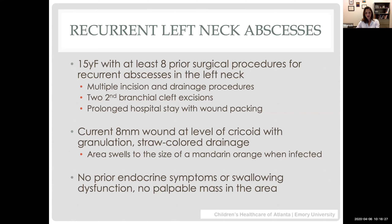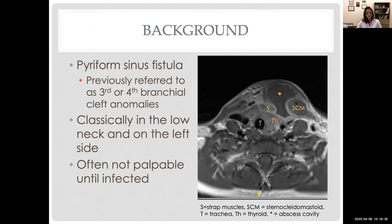She had never had any endocrine symptoms or swallowing dysfunction, and at presentation had no palpable mass in the area. In a patient like this you're concerned for a pyriform sinus fistula — sometimes referred to as third and fourth branchial cleft anomalies. These are classically low in the neck and classically associated with the left side of the thyroid. On imaging you can see the thyroid gland, trachea, and an abscess cavity with an asterisk between the SCM and strap muscles — a really typical location.